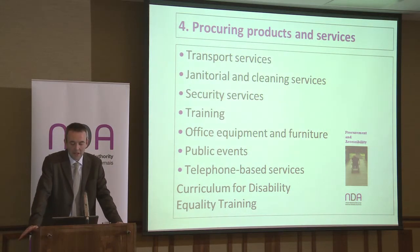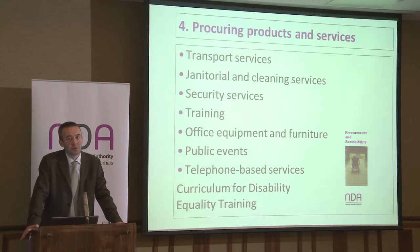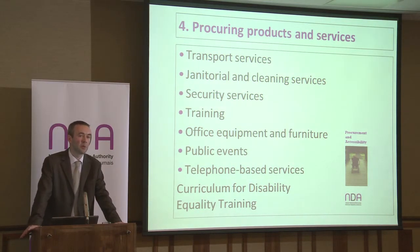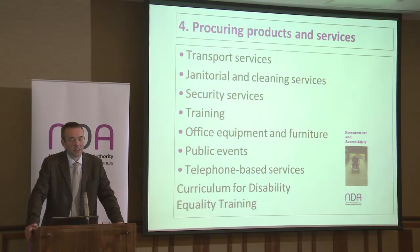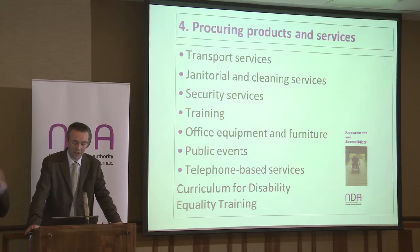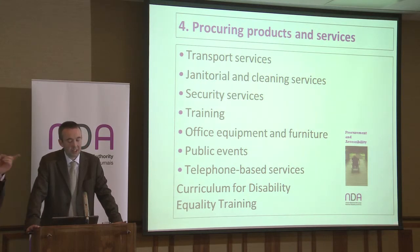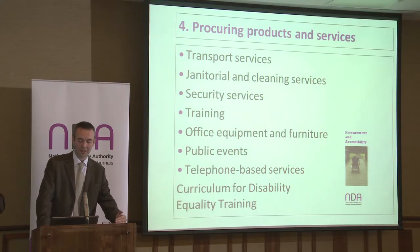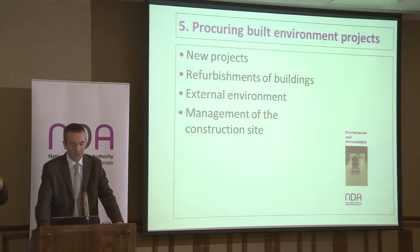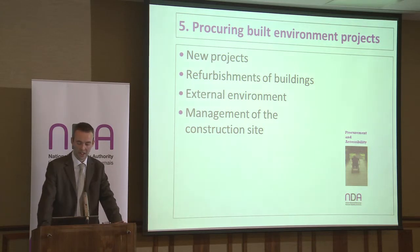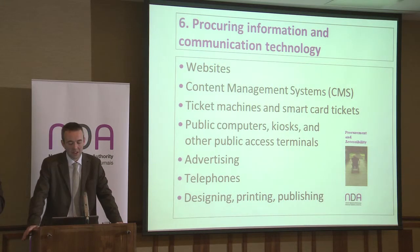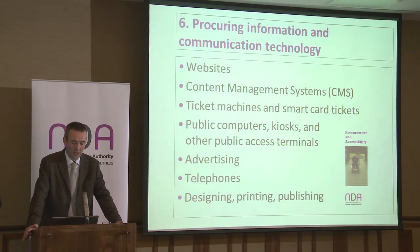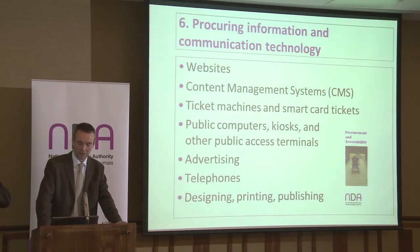Chapters 4, 5, and 6 of this publication have a whole lot of selection and award criteria that you can copy and paste — all worded very carefully. Chapter 4 covers procuring products and services such as transport services, security services, and hiring an area for an event. There's also a bonus curriculum for disability equality training. Chapter 5 covers built environment projects including new and refurbished buildings. Chapter 6 covers information and communication technology, including websites, advertising, videos, and anything designed or printed for you.